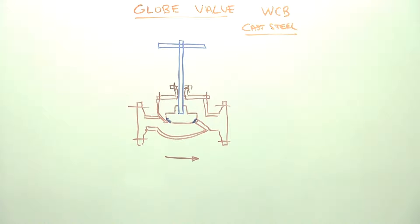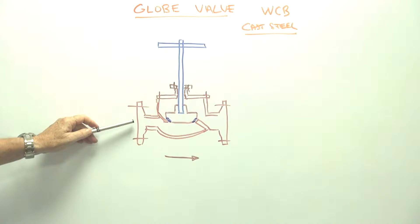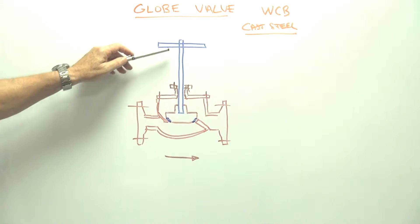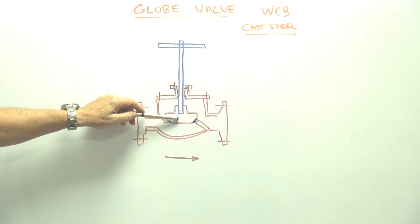They're a cast steel body, we call it WCB, the cast steel. I'll show you the actual unit afterwards but it's basically a handle coming down with a shaft and this goes on to this globe shaped seat here.